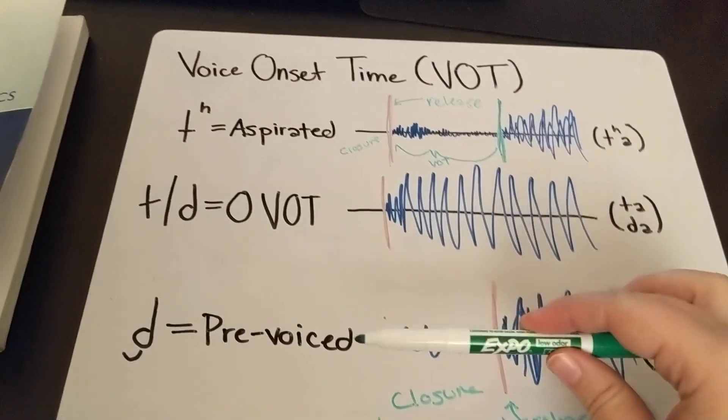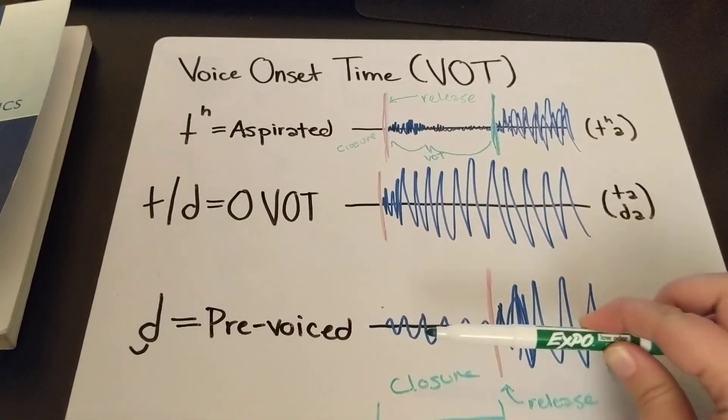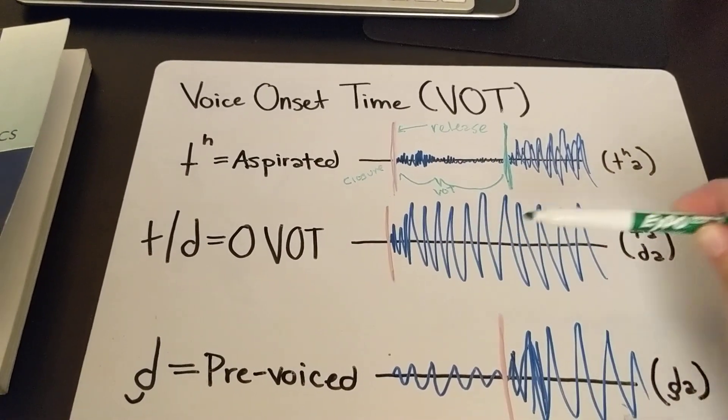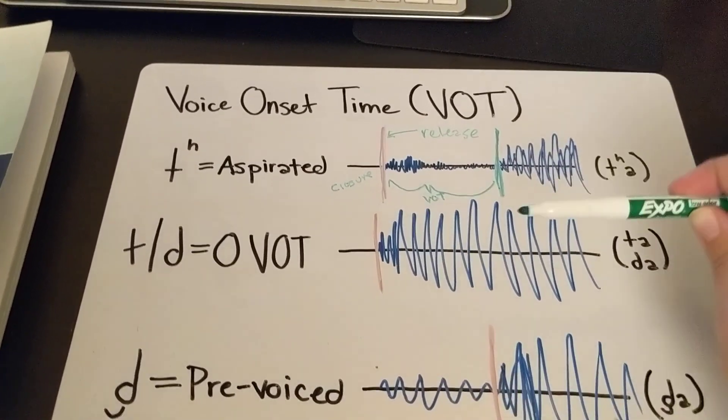Now we have this area in between something that is clearly aspirated and something that is clearly pre-voiced, and these are what we call like regular T's and D's. And language to language,